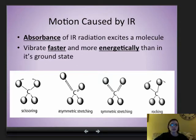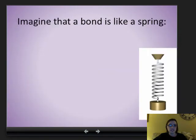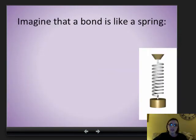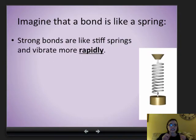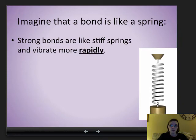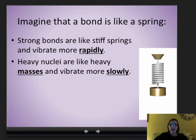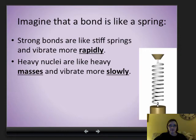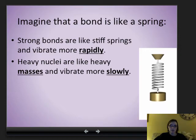Because of this radiation, your molecules and atoms vibrate faster and more energetically than they would in the ground state. Imagine that a bond is like a spring. Strong bonds are like stiff springs, so they vibrate more rapidly. Heavy nuclei are like heavy masses, and they vibrate more slowly.